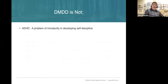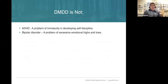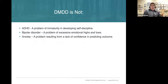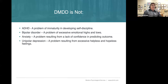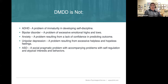Here's my take on differential diagnosis. DMDD is not ADHD, which is a problem of immaturity and developing self-discipline. DMDD is not bipolar disorder — research studies clearly show bipolar involves much more extreme highs and lows lasting longer periods of time. It's not a result of anxiety, which I see as a challenge in confidence in predicting outcome. It's not a consequence of unipolar depression, which results from feeling helpless or hopeless. And it's not a consequence of autism spectrum, which I see as a social pragmatic problem with accompanying difficulty in self-regulation and atypical interests.